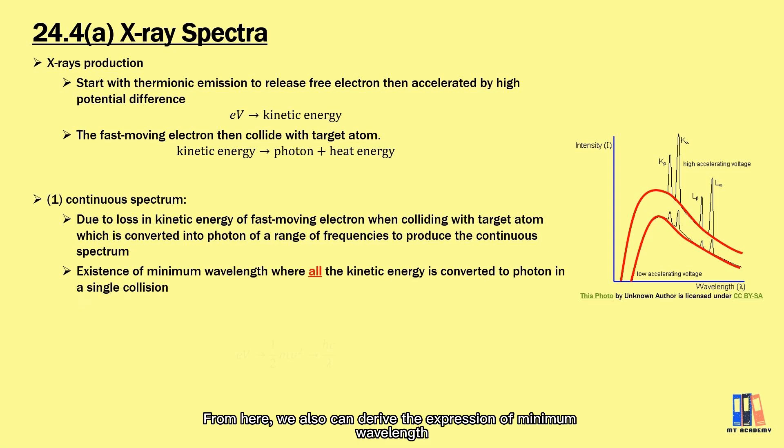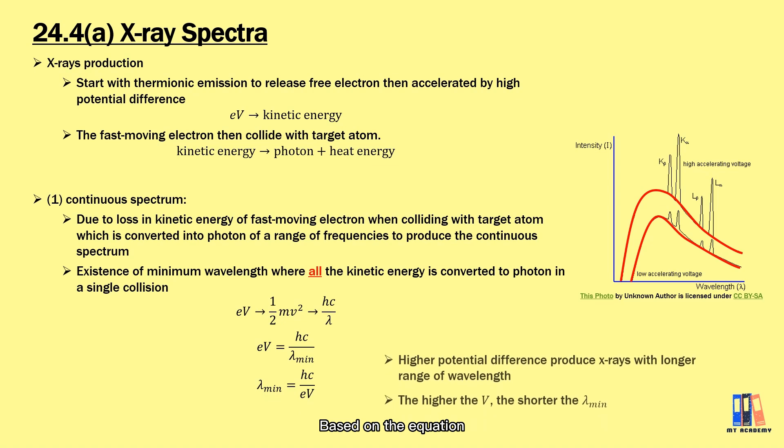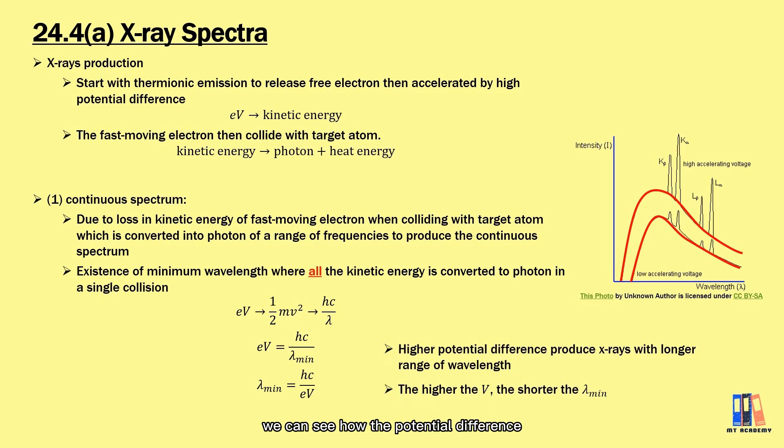From here, we can also derive the expression of minimum wavelength based on energy conversion from electric potential energy to kinetic energy then to photon energy. We can take eV equal to hc over lambda, rearrange the equation, and we can obtain the minimum wavelength in terms of potential difference which is equal to hc over eV. Based on the equation, we can see how the potential difference affects the range of wavelength photons produced, where we can get lower values of minimum wavelength when we increase the potential difference.